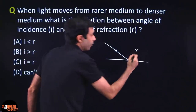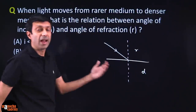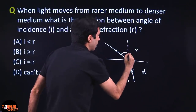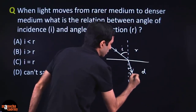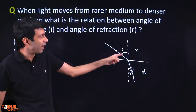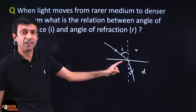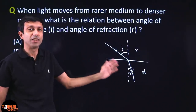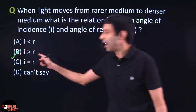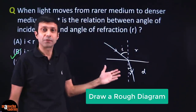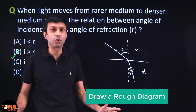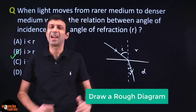Light is moving from a rarer medium to a denser medium. When that happens, we know light bends towards the normal. This is the angle of incidence, and this is the angle of refraction. Clearly, the angle of incidence is greater than the angle of refraction — the angle in the rarer medium is bigger than the angle in the denser medium. These angles are always measured with respect to the normal. So the correct answer is I greater than R. Drawing rough diagrams is not a waste of time — that's how you solve questions fast and accurately.